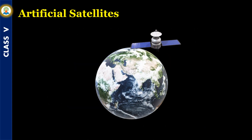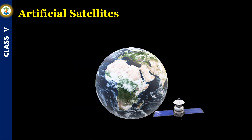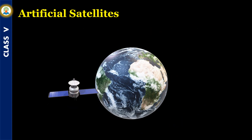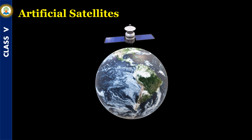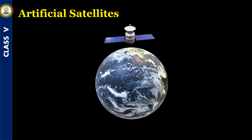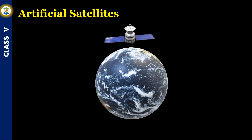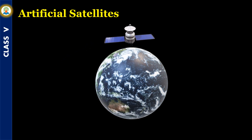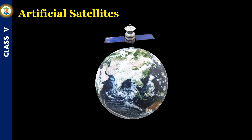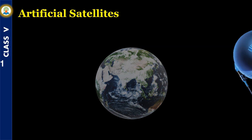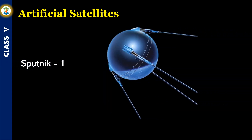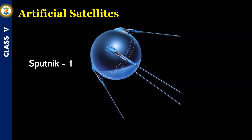Artificial satellites are man-made. They are launched from the Earth and revolve around the Earth much closer than its natural satellite. The first artificial satellite, Sputnik 1, was sent by the former USSR in 1957.